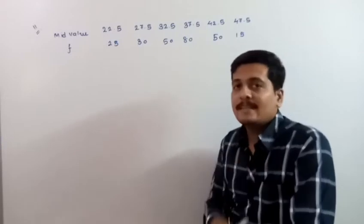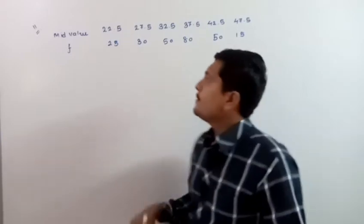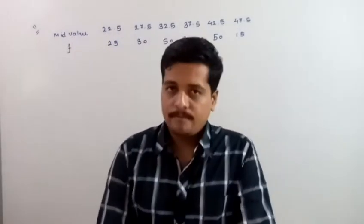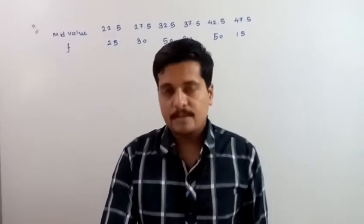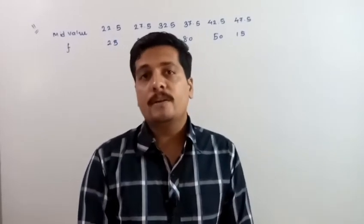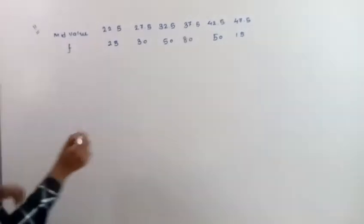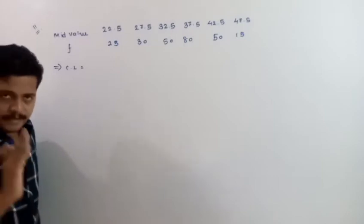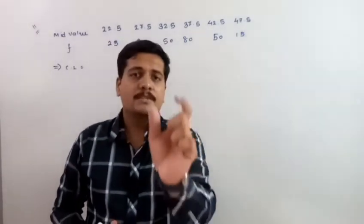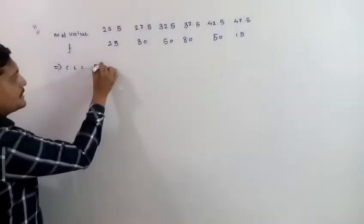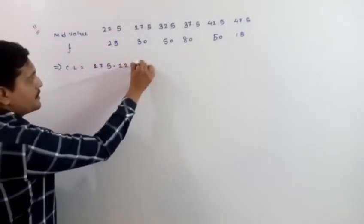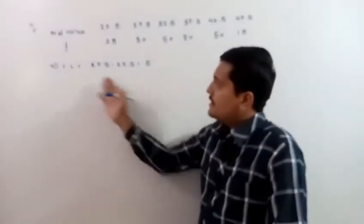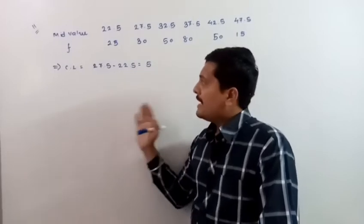First of all, we need to find the class length — the length of each class. What will the class length be? Simple: class length is equal to the difference between any two consecutive mid values, i.e., second mid value minus first mid value. So class length = 27.5 − 22.5 = 5. So 5 is the class length.